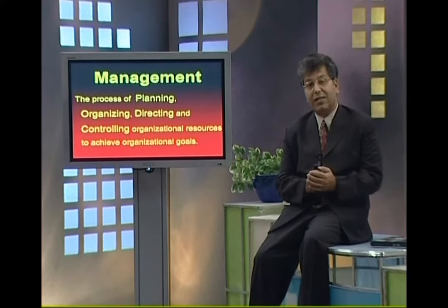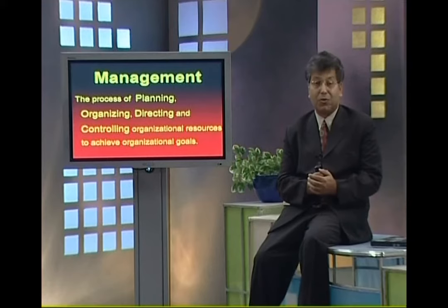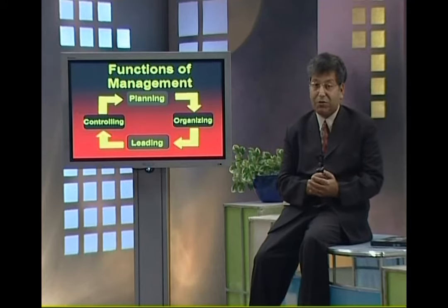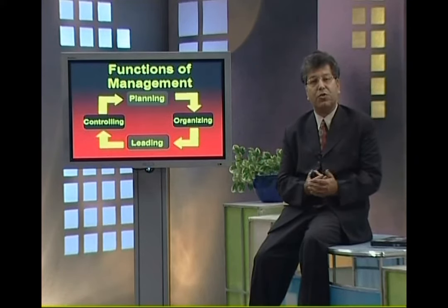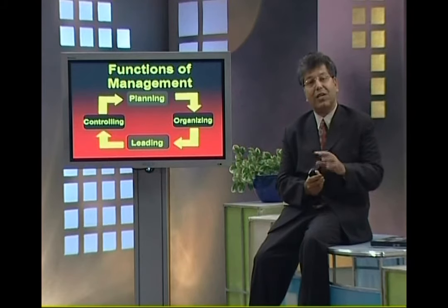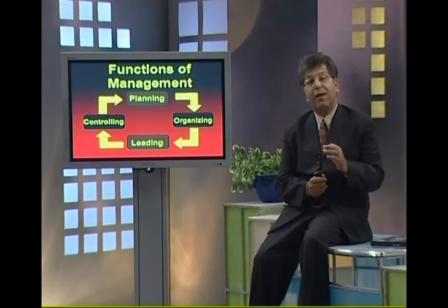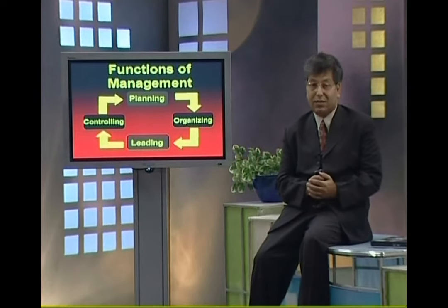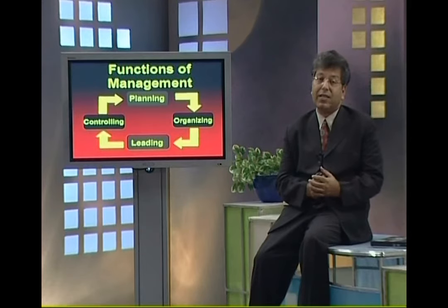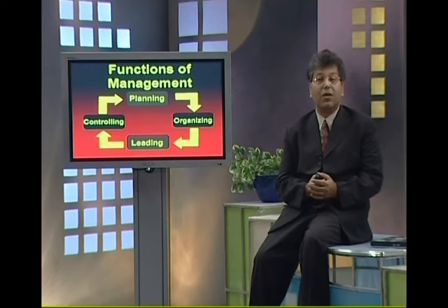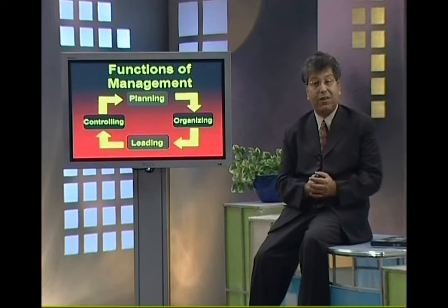So basically, management is a process in which we plan, organize, control, and direct those resources which exist inside any organization, so that they can achieve their predetermined goals efficiently and effectively. You might now feel: what is planning, what is organizing, what is controlling, what is directing? Let's see what those things are. The four basic functions don't mean management has no other work — yes, staffing is there, negotiation, listening, dissemination of information — many different activities are involved. But basically, these four functions are the core: planning, organizing, leading, and controlling.